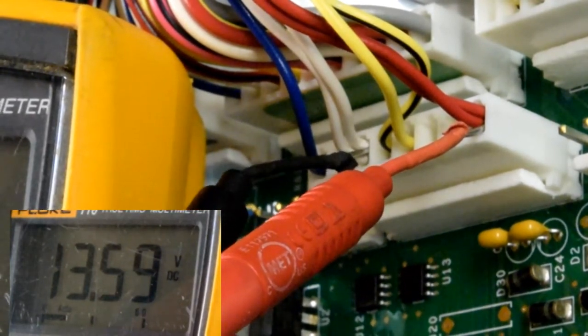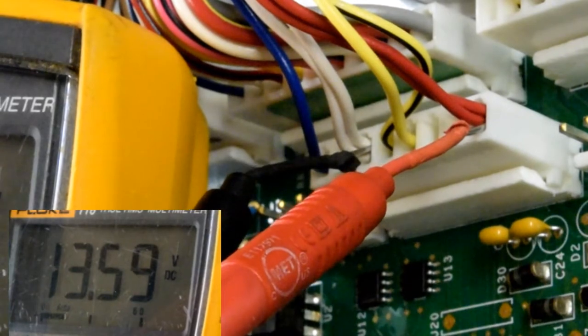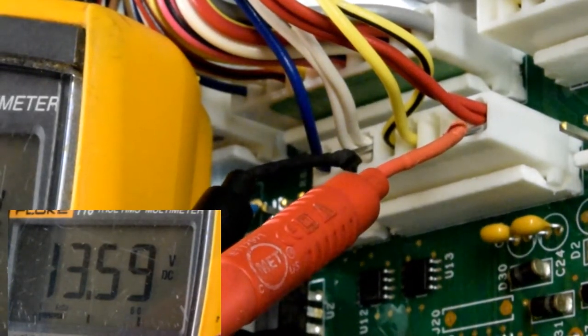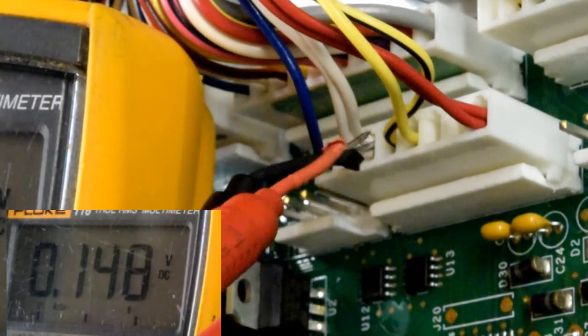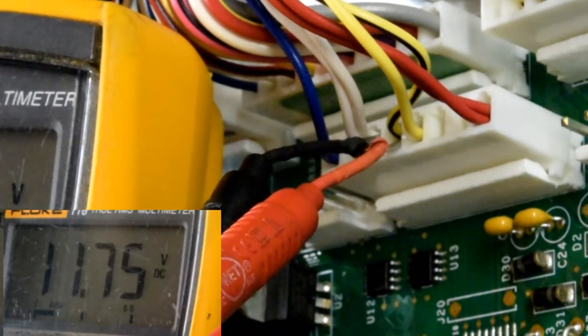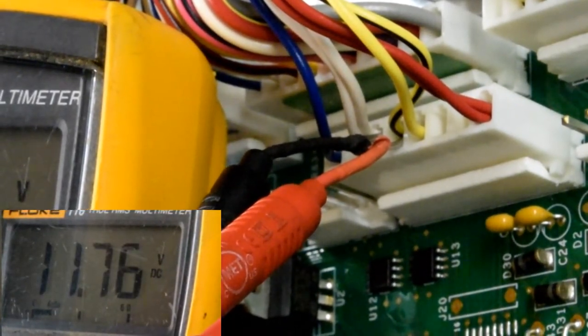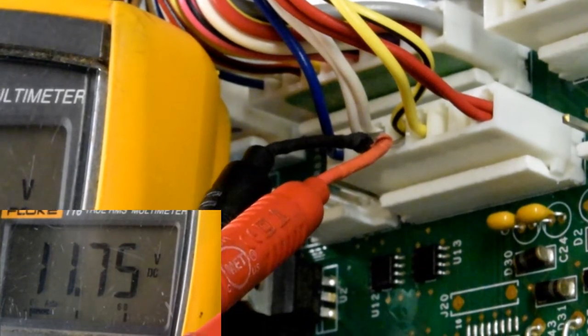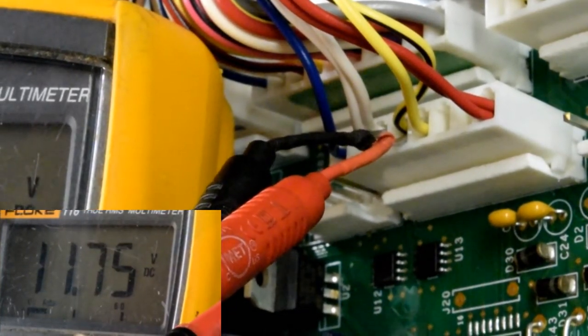Now for the second test, we're going to test the evaporator fan motor. Leave your black where it's at, remove the red, and put it right next to the black one on the right - pin number 4. Again, somewhere between 12 and 14 volts is fine, anywhere in that neighborhood. It's actually a variable speed motor, so it may flux.